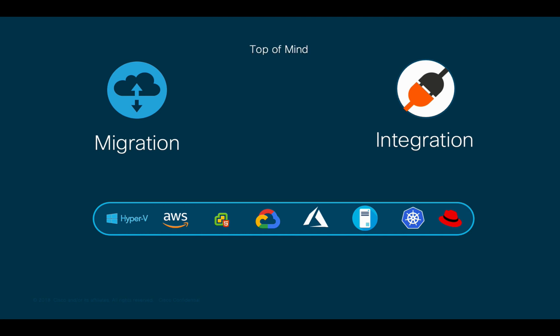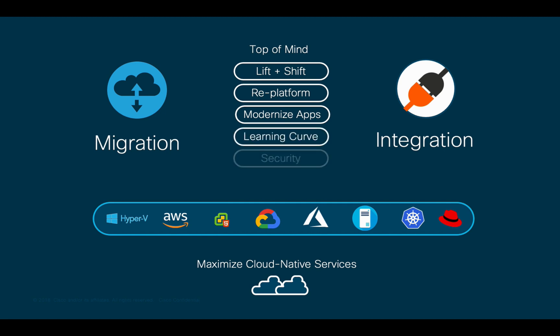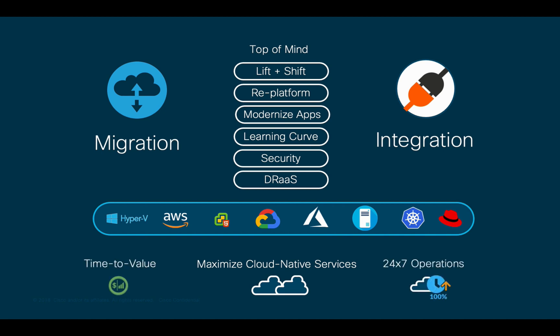Migrating to the cloud may mean lift and shift for some organizations, or result in re-platforming or re-architecting applications for many others, with the latter resulting in more efficient usage of cloud-native services. In any case, the time it takes to learn the cloud terminology, integrate a hybrid cloud model, and deliver security consistently are common concerns for CIOs, which have a direct impact on operations, time to value, uptime, and many others.